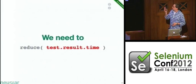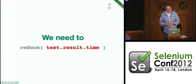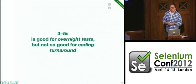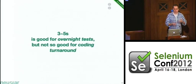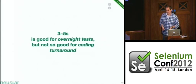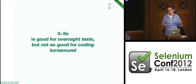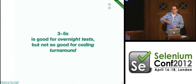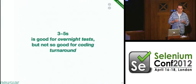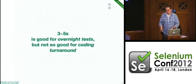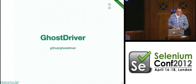What we really need to do is reduce how long it takes to get a result out of a test. Three to five seconds might be good enough for overnight tests, but multiply that by the number of tests you run overnight — or when you're developing and want to make sure nothing is broken. Three to five seconds multiplied by a hundred tests takes a sensible amount of time. You want to reduce the coding turnaround. I think you write better code faster and you're happier when you can write code and see the feedback immediately. That's why I started to write GhostDriver.